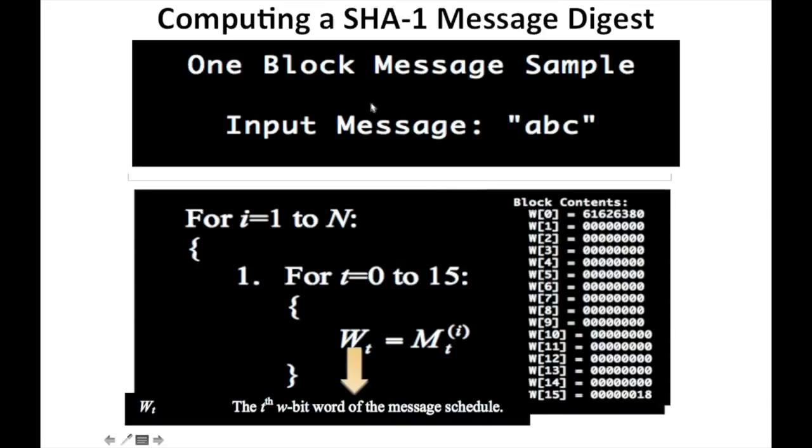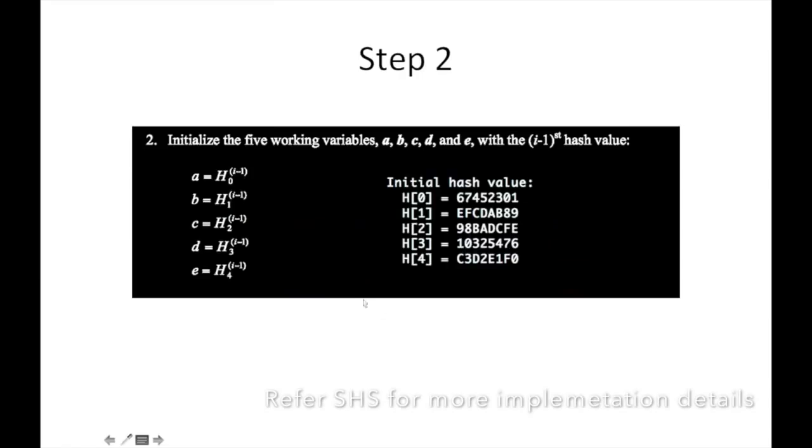Here's the algorithm to calculate a SHA-1 message digest for a given example message ABC. We're using one block message sample, meaning there's only one block of 512 bytes. In this case, we have to iterate for i to n and we have to form Wt. Wt is the tth W bit word of message schedule. From 0 to 15, we'll calculate what message schedules are available. Second, we'll initialize all the working variables A, B, C, D, E with the initial hash value.